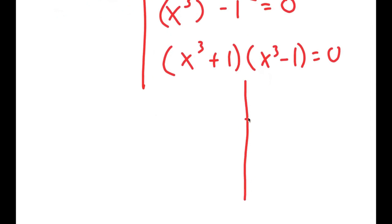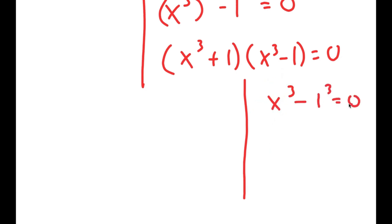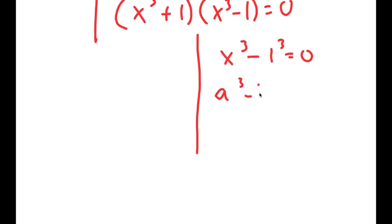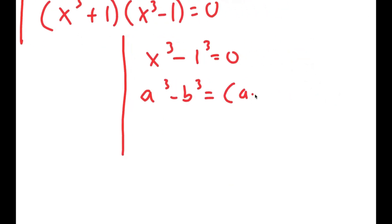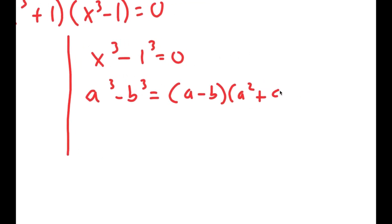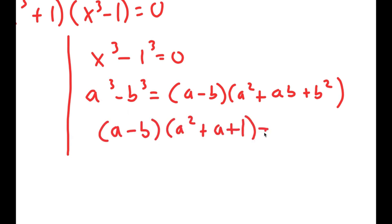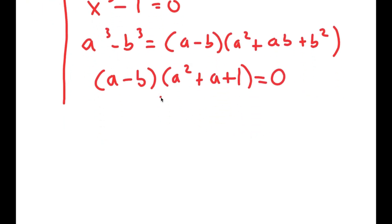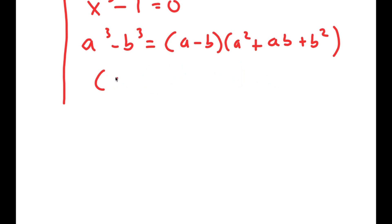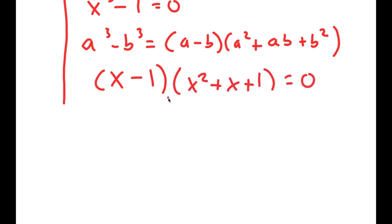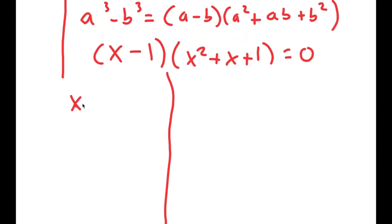For x to the power of 3 minus 1 equals 0, I'm going to rewrite this as x to the power of 3 minus 1 to the power of 3 equals 0. Using the property a³ minus b³ equals a minus b times a² plus a plus 1, this turns into x minus 1 times x squared plus x plus 1 equals 0, which gives me yet another two equations: x minus 1 equals 0, and x squared plus x plus 1 equals 0.